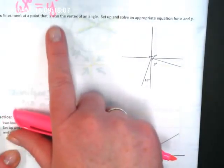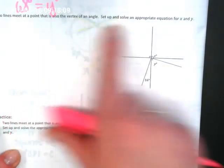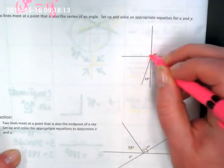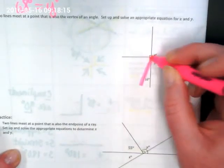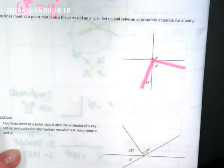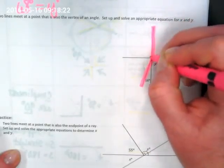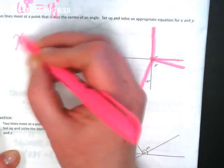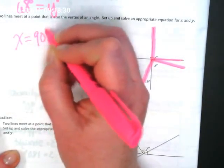So let's look at number two. Two lines that meet at a point that is also the vertex of an angle. Set up and solve an appropriate equation for X and Y. What do you see here? That's a 90 degree angle. X is over here. It is what? 90. Yeah. So we know. We don't even have to set up an equation. X is equal to 90 degrees.